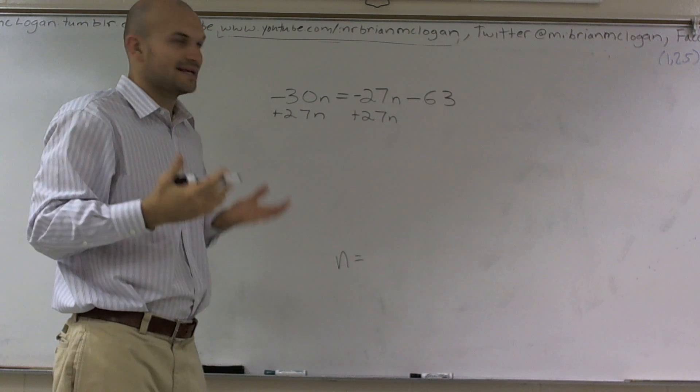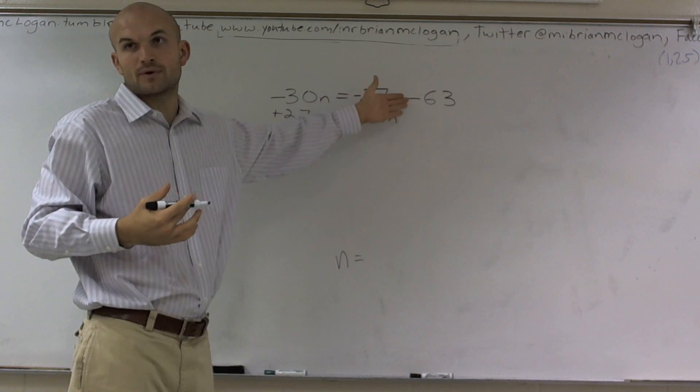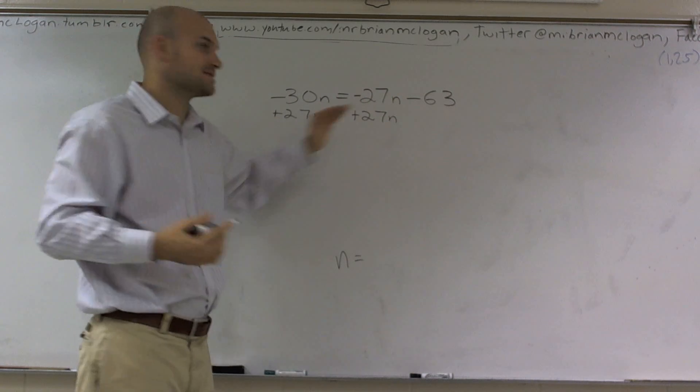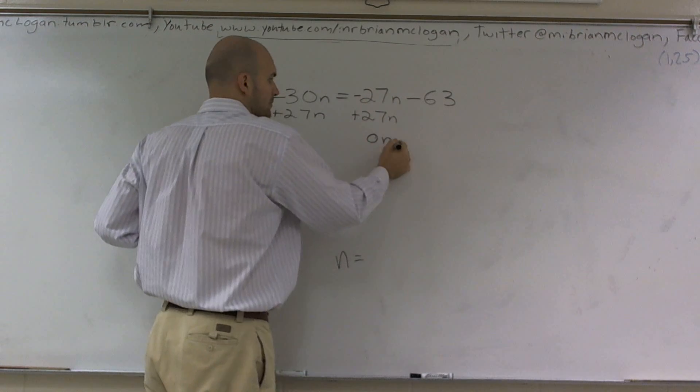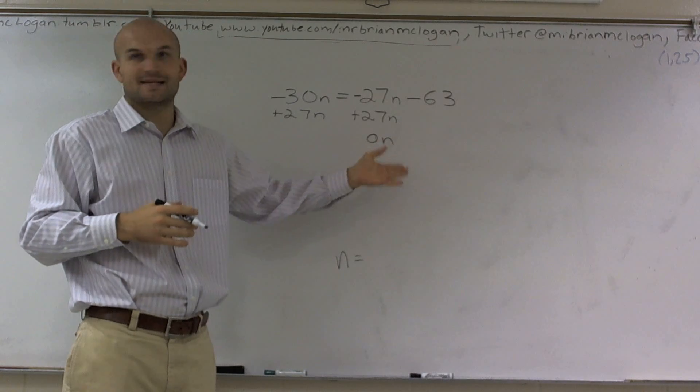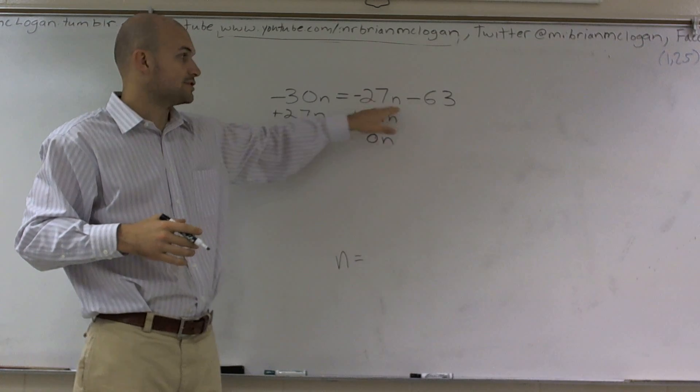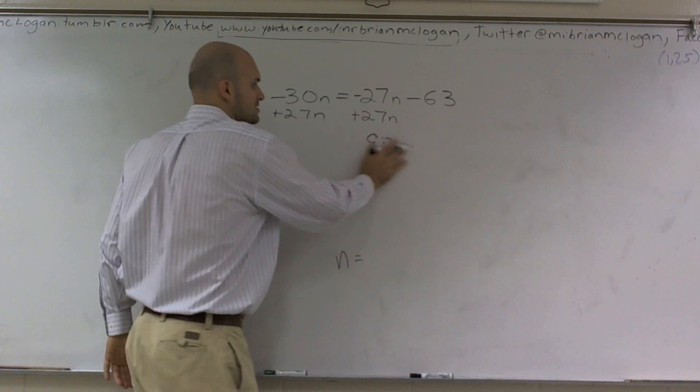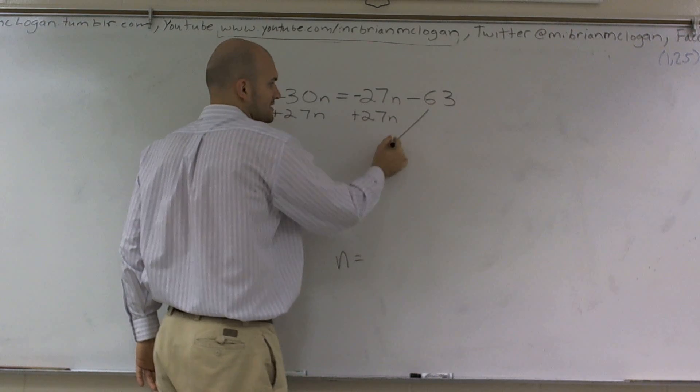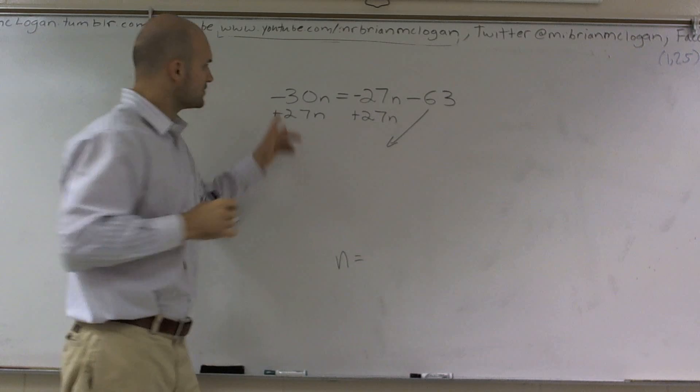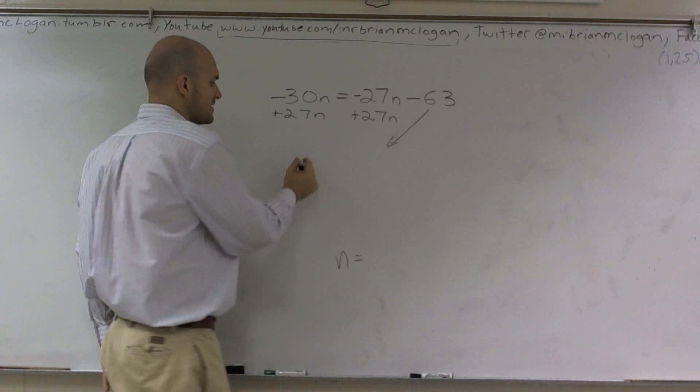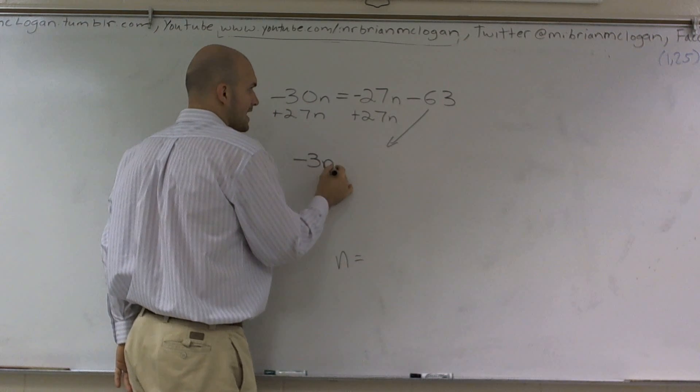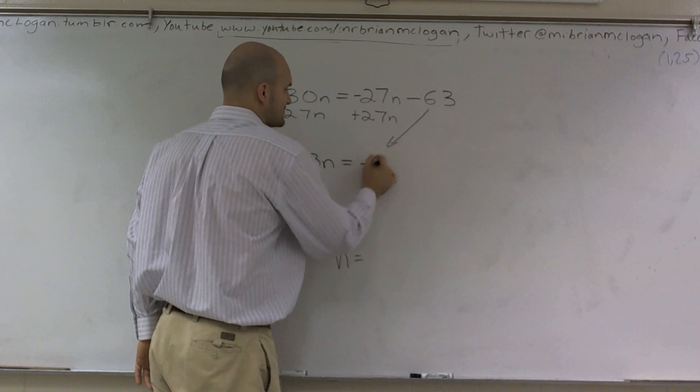What I mean by getting rid of it, this is a negative 27n. When I add a positive 27n, I'm left with 0n. Well, 0 times anything is going to give you 0. 0 minus 63 is still going to give you just negative 63. So that's why we don't even bother writing it. A negative 30n plus 27 is negative 3n equals negative 63.